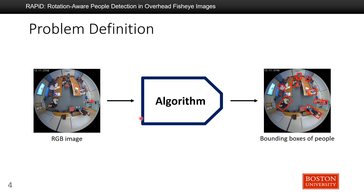Here is our problem definition. We have an image taken from an overhead fisheye camera, and we want to design an algorithm that can produce bounding boxes that align to human bodies as tightly as possible.